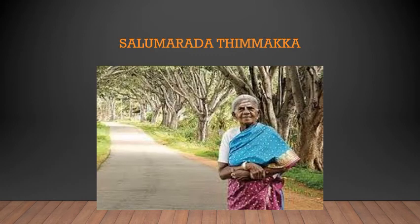As you can see in the picture, her name is Salumarada Timmakka. She is the proud daughter of Karnataka and is also known as Vrikshamate throughout the country. She is well known for protecting the trees. She has planted thousands of trees throughout her lifetime, watered them every day, and took care of them like they were her own kids.